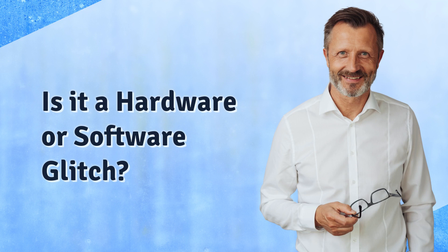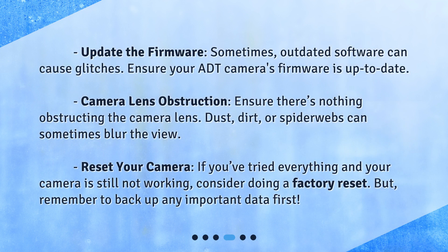Is it a hardware or software glitch? Update the firmware — sometimes outdated software can cause glitches, so ensure your ADT camera's firmware is up to date. Camera lens obstruction: ensure there's nothing obstructing the camera lens. Dust, dirt, or spider webs can sometimes blur the view. Reset your camera — if you've tried everything and your camera is still not working, consider doing a factory reset. But remember to back up any important data first.